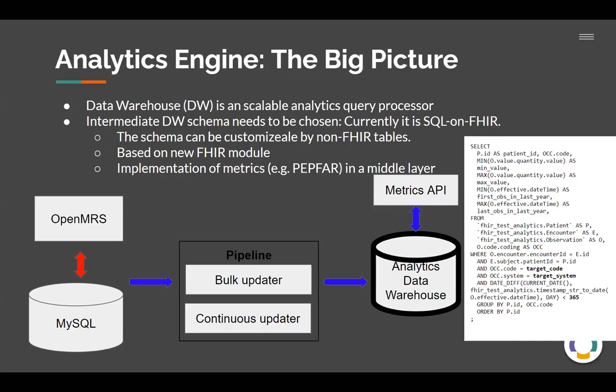We want to be flexible to support various types of data that people may have, which might be custom and specific to their implementation. So we should have the flexibility to bring that data into the database. But at some point we need to pick a schema for the data warehouse. That's actually one of the bigger challenges — figuring out what is the right schema. I don't know if anyone knows an answer that is good for every implementation. So we have basically fallen back to a standard, which is FHIR in this case. The schema that we have picked for the data warehouse is SQL on FHIR, which is basically the FHIR resources projected into a SQL schema.